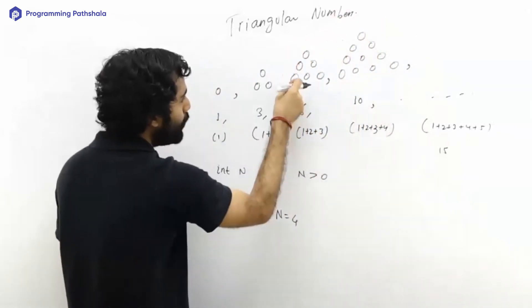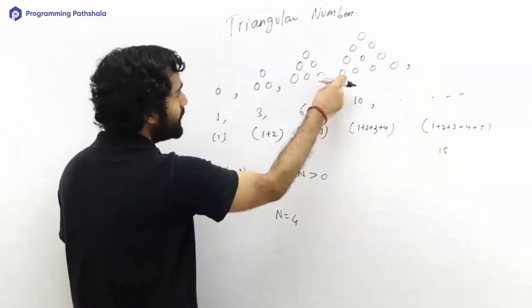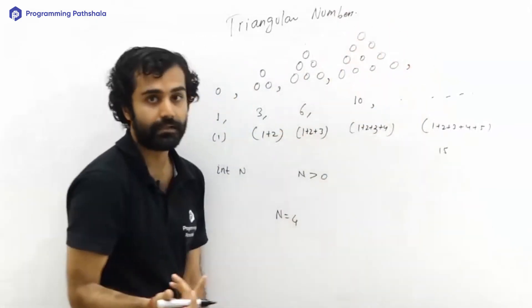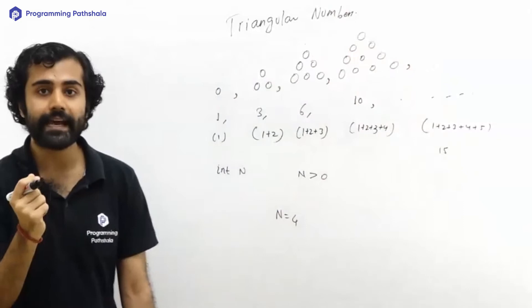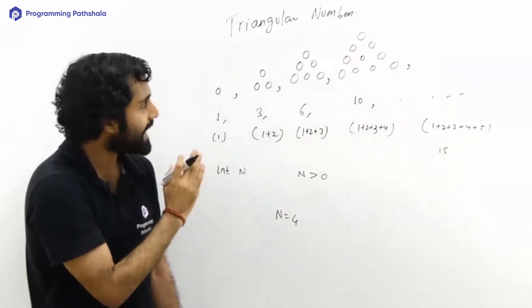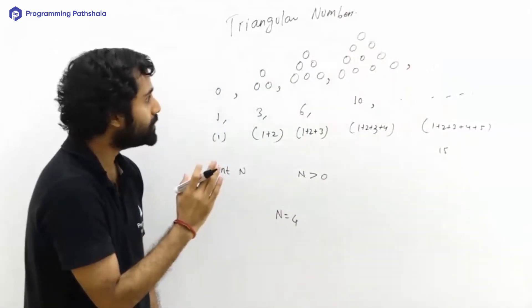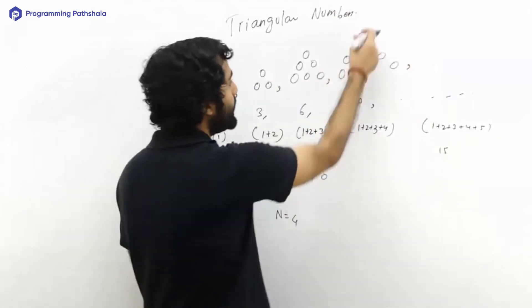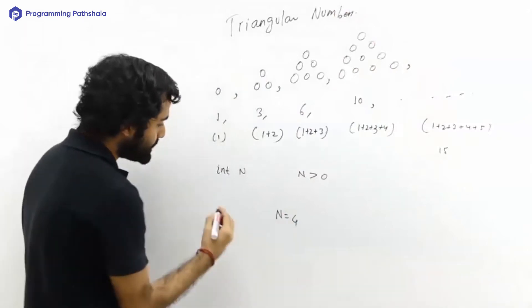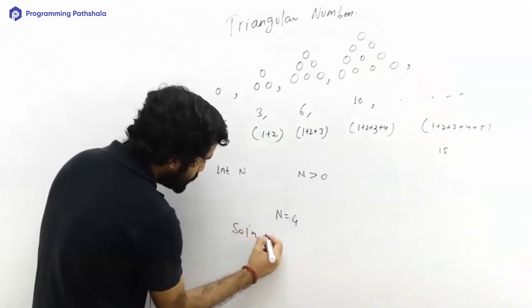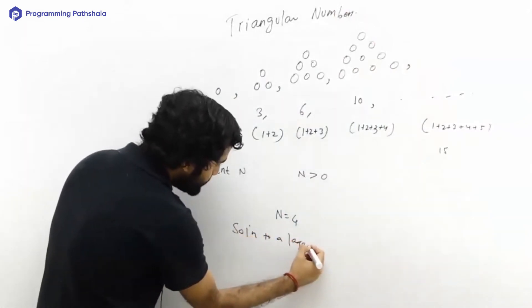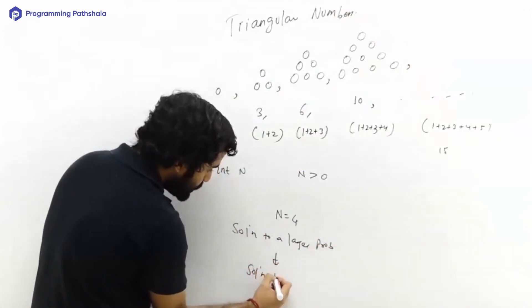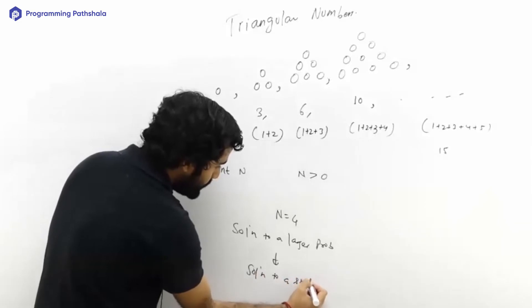When you add four more dots below this thing, this is what you will be getting. This is an idea to understand. What is happening over here? If I know the solution to smaller problem, using it I'm able to create the solution of a larger problem. So I'll write this line: solution to a larger problem is being obtained from solution to a smaller problem.